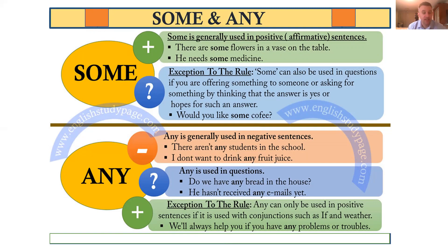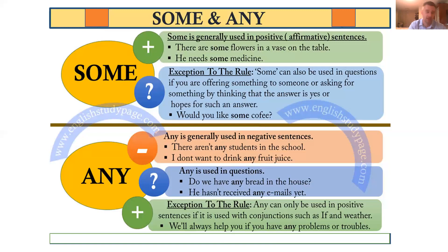There is an exception: 'any' can be used in positive sentences with conjunctions such as 'if' and 'whether' — for example: 'We will always help you if you have any problems or troubles.' But focus on the main point: affirmative sentences use 'some', negative sentences use 'any'. That will be enough for now. Take a picture of this because it will help you with the exercise.